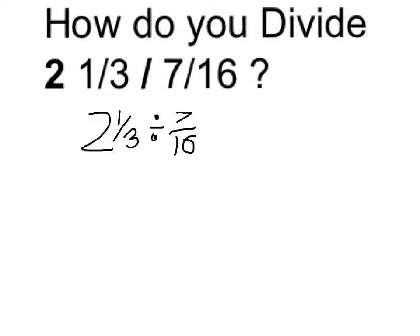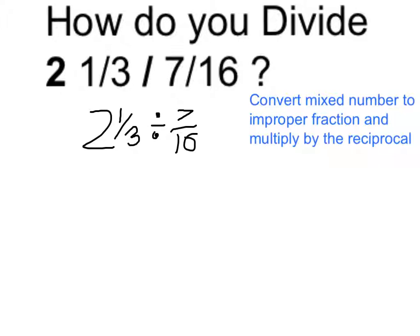Now let's perform the algorithm to actually do it. I'm going to make this into an improper fraction, and I'm going to change the division to multiplication and take the reciprocal of my second fraction. 2⅓ is going to be 2 times 3, which is 6, plus 1, so it's going to be 7/3.